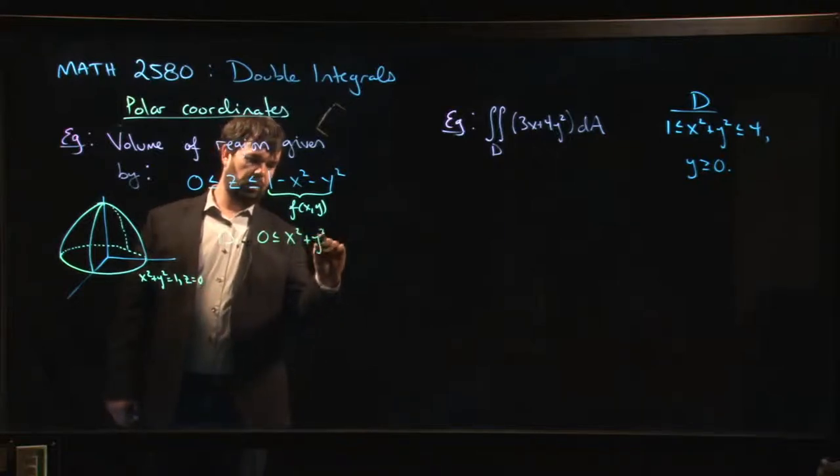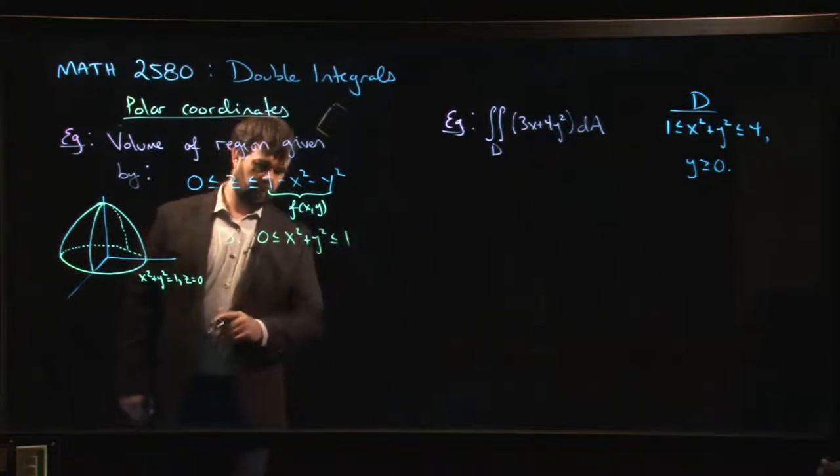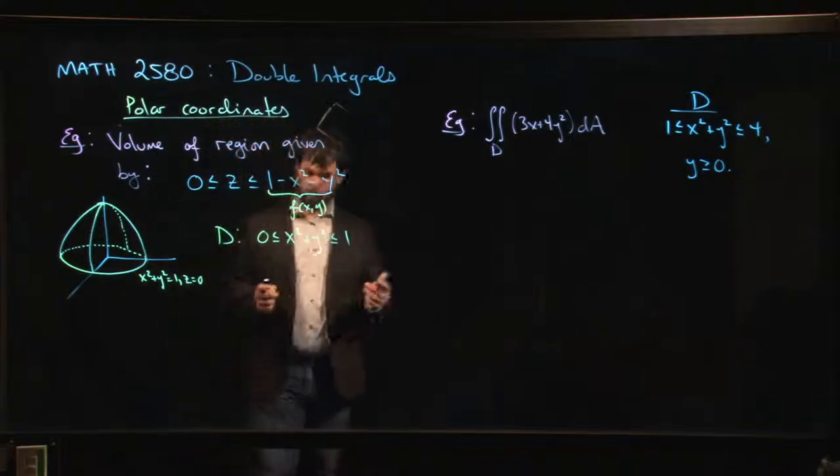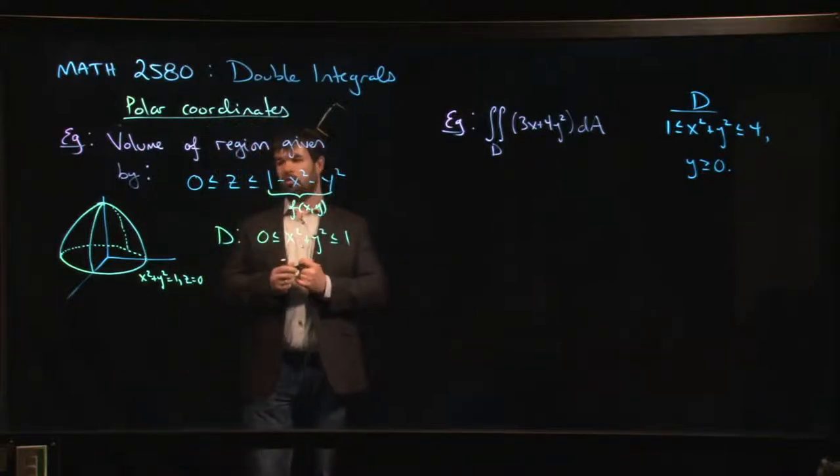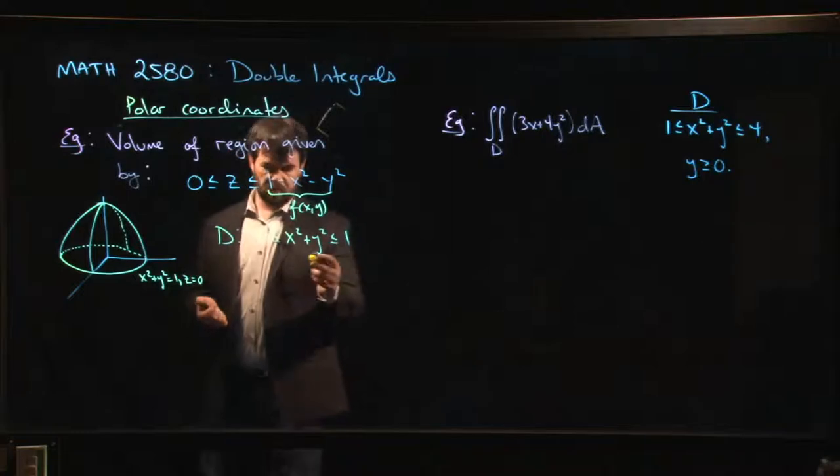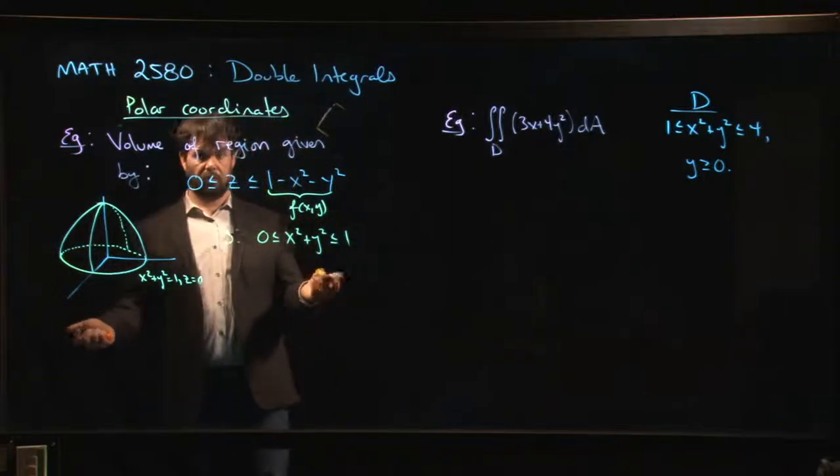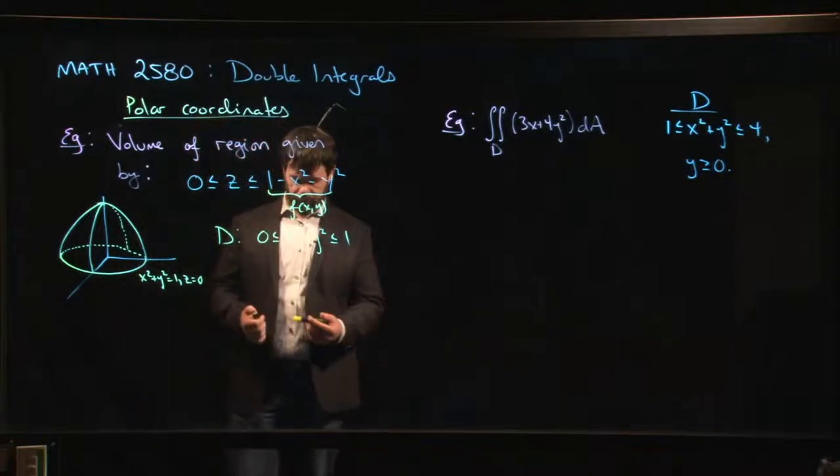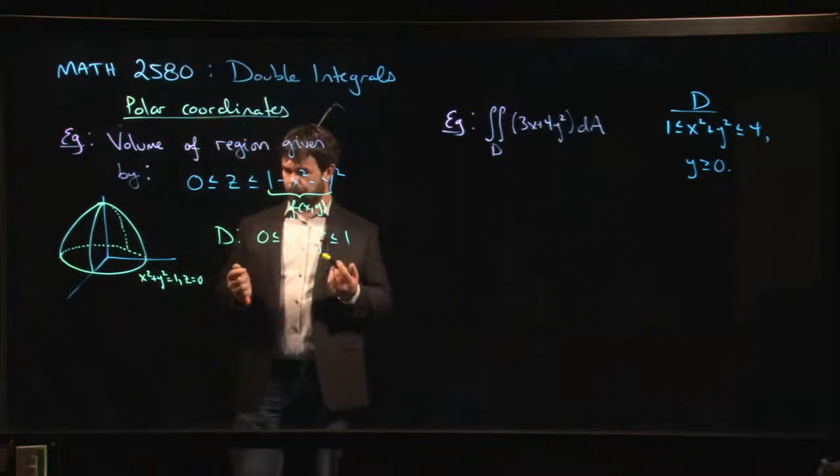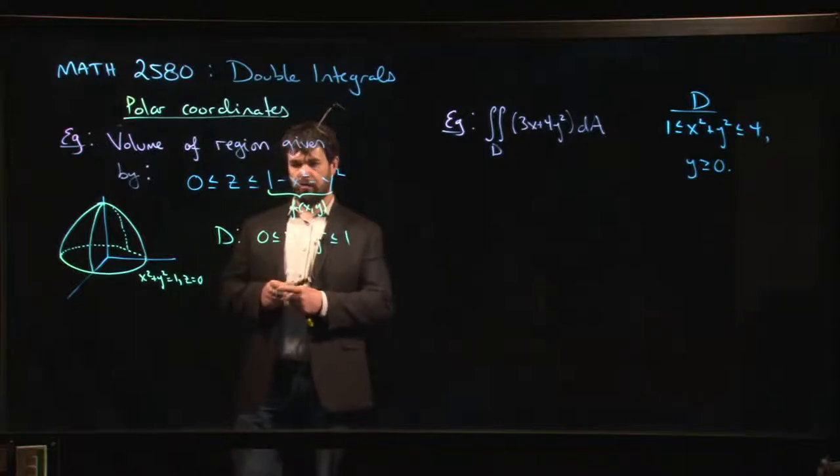This disk in the x, y plane that this thing sits over. So d is given by, well, here's one way to do it, x squared plus y squared has to be between 0 and 1. So it's everything that is on and inside the unit circle. That's the region of integration.